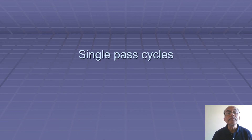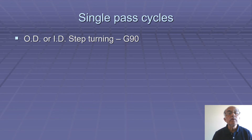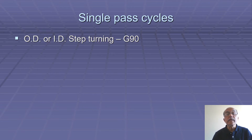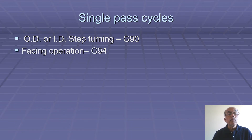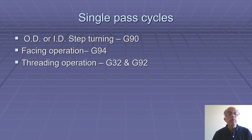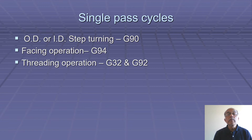Now we'll see different single pass cycles. First is outside diameter or inside diameter step turning — for this operation, G90 single pass cycle is used. For facing operation, G94 fixed cycle is used, and for threading operation, G32 or G92 cycle is used. Single pass cycle means for each cut we have to make a separate program block.